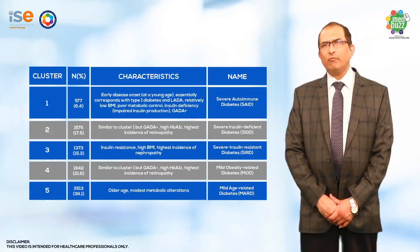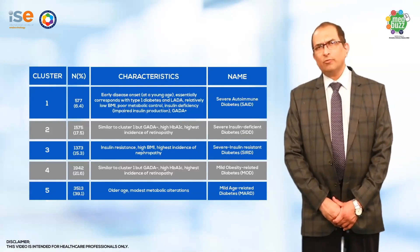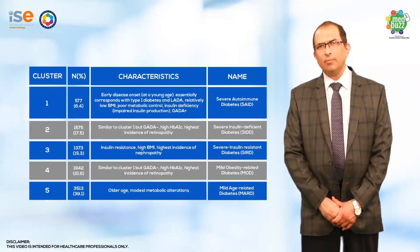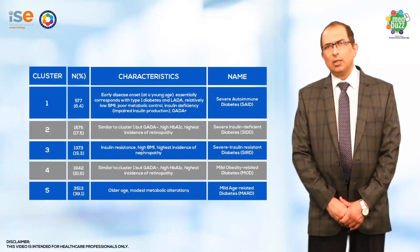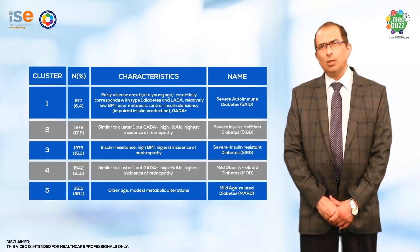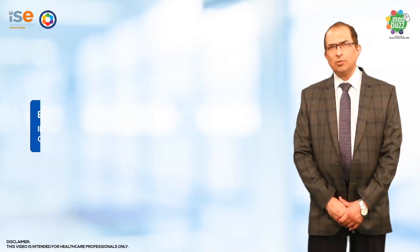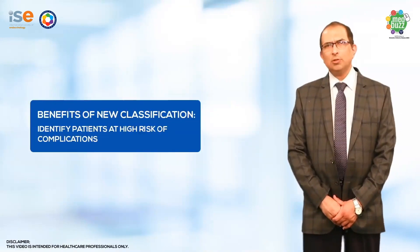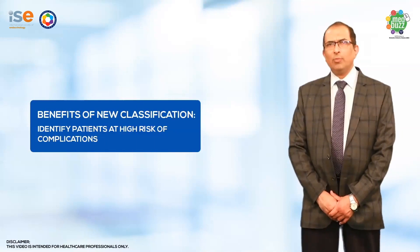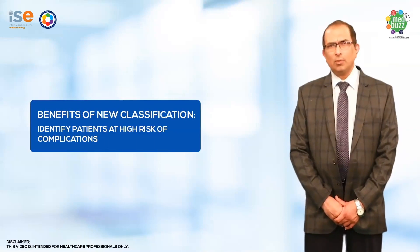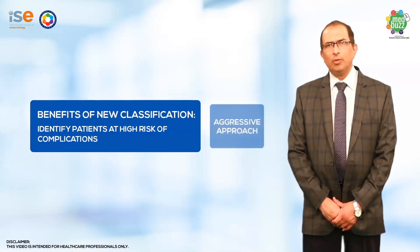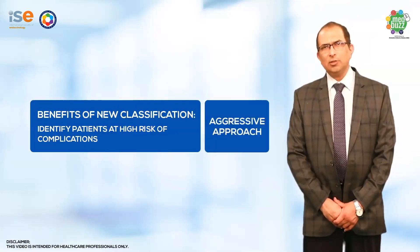And then there are two milder forms of diabetes: diabetes related to obesity, and diabetes related to old age. If we use such a classification, we are able to upfront identify people who are at risk for the complications of diabetes and address these right from the beginning.